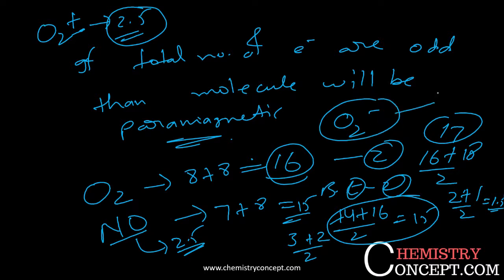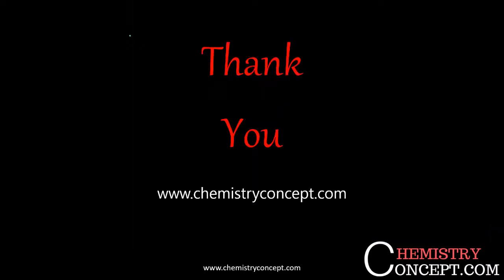Notice that when you add electrons the bond order decreases, and when you remove electrons the bond order increases. This is how you find the bond order using this table method — it's a very easy way to determine both the bond order and the magnetic behavior of any molecule. Thank you for watching; if you have any doubts, please put them in the comment box.